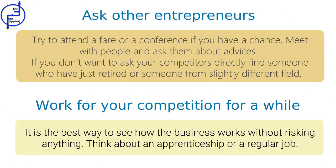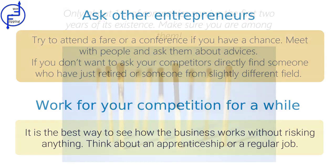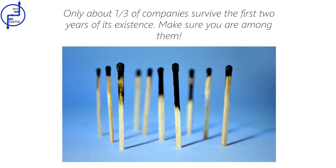The last part is very important. Smart people can learn from the mistakes of others. Try to attend a fair or a conference if you've got the opportunity. Meet with people and ask them for advice. If you don't want to ask your competitors directly, find someone who's just retired or someone from a slightly different industry. To be even more experienced, think about working for your competition for a while — it's the best way to see how the business works without risking anything. Think about a kind of apprenticeship or a regular job if you're not sure if you're good for this industry. These methods might seem complicated, but it's the only way to succeed. Only about a third of companies survive the first two years of existence — make sure you're among them.